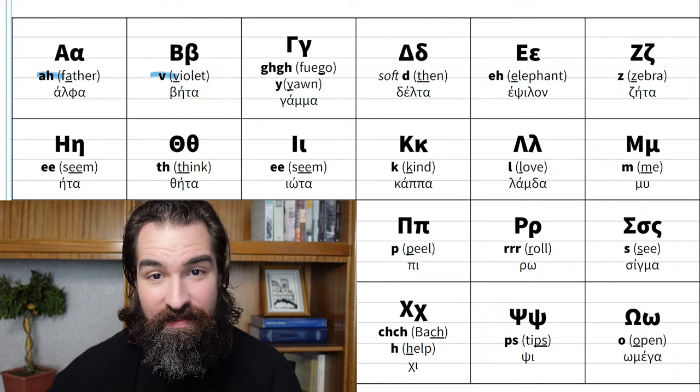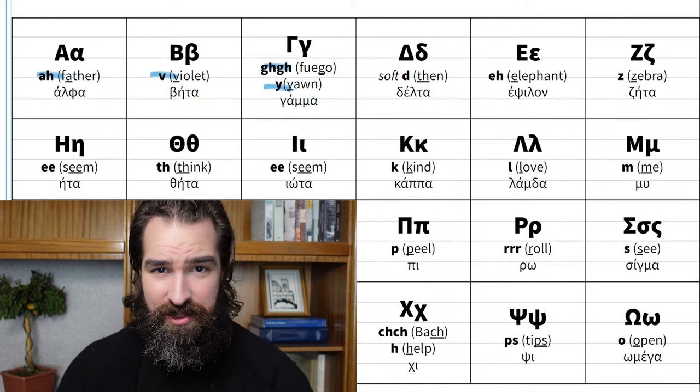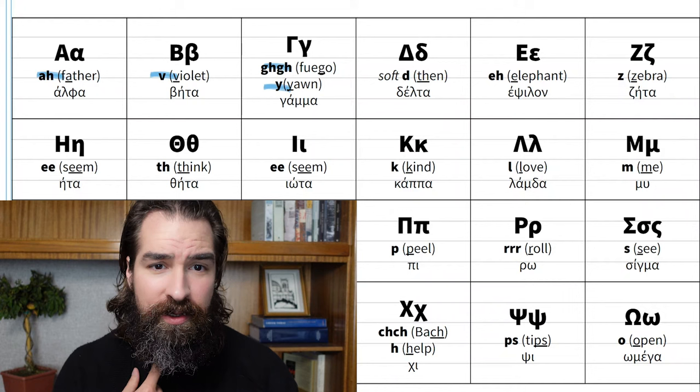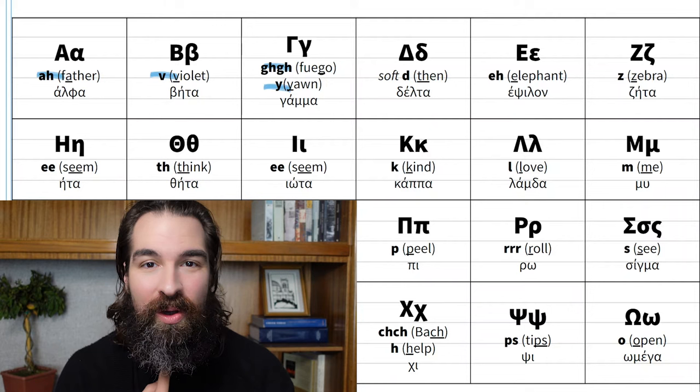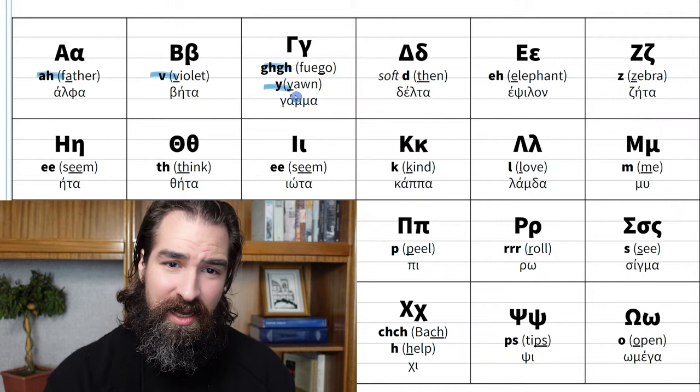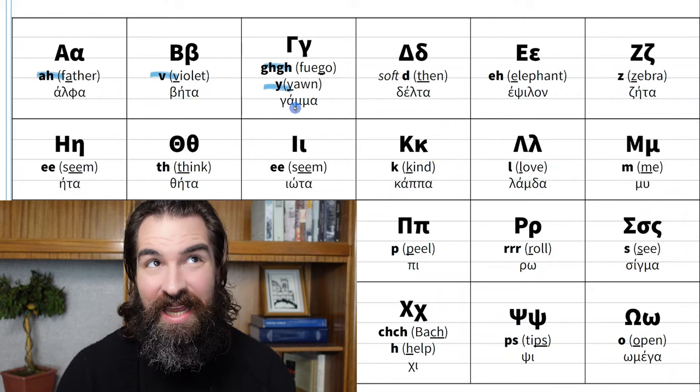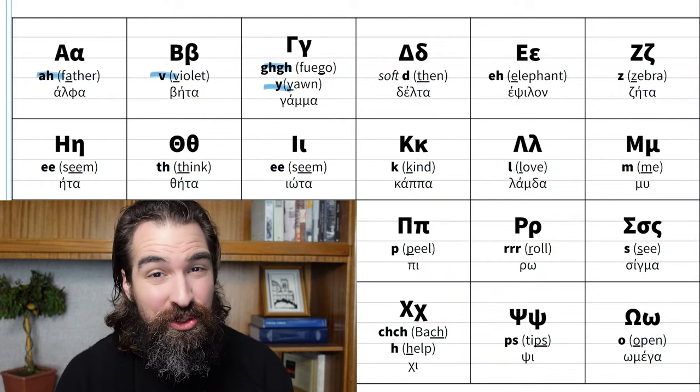Gamma can make two sounds. It can make a G caught in your throat, like in Spanish 'fuego' — you really feel it in the throat. And sometimes it makes a Y sound. For example, if you know how to say hello in Greek, 'yasu' — that Y sound at the beginning is gamma. When does it make each sound? That depends on what follows it, and we'll pick that up by listening.